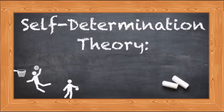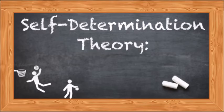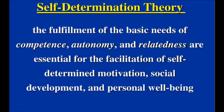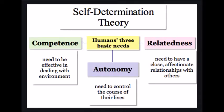I will explicate the concept of metatheory with an example, and the example is self-determination theory. Everyone working in the area of organization, personality, and psychology knows what is self-determination theory. This theory was proposed by Deci and Ryan in 2000. The theory states that the fulfillment of the basic needs of competence, autonomy, and relatedness are essential for the facilitation of self-determined motivation, social development, and personal well-being.